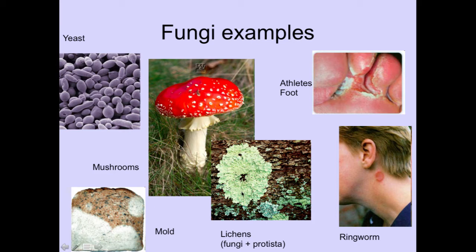Here is a lichen. In front of the school where we have those big rocks, there's actually tons of lichen growing on them. A lichen is actually a symbiotic relationship between a fungus and a protista — algae and protista together. We consider it fungus because it is more dominant, but it actually is two different types of cells living together.